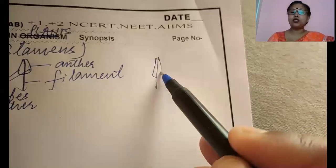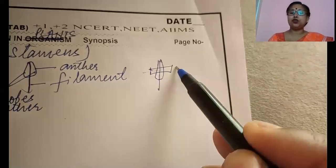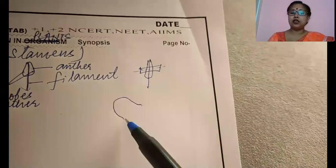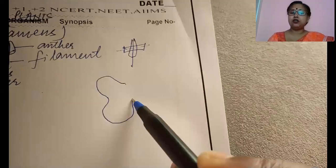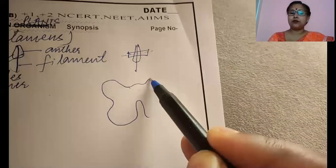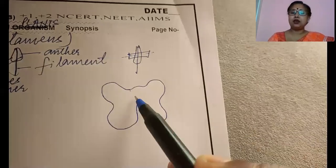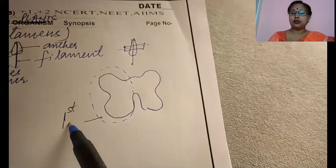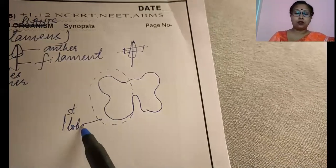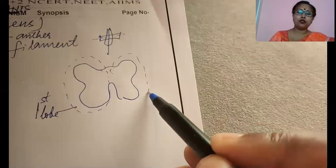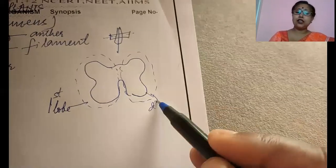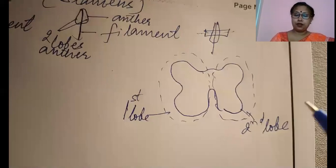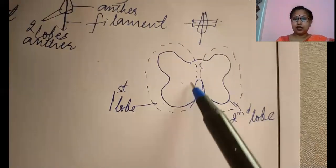Let me take a cross section — that is, a transverse section of the anther — to show you its anatomy. When we cut it transversely, we get a structure just like a butterfly structure. We call this the butterfly structure. This is one lobe, and this is the other lobe — first lobe and second lobe. The androsium is bilobed.